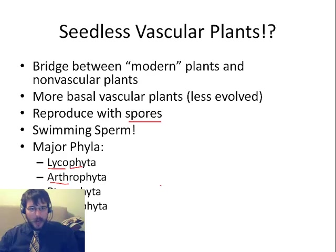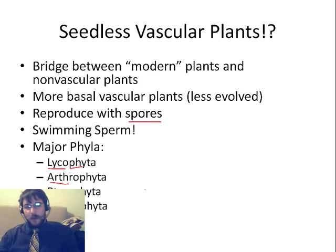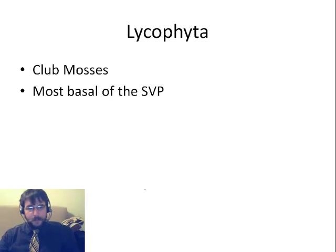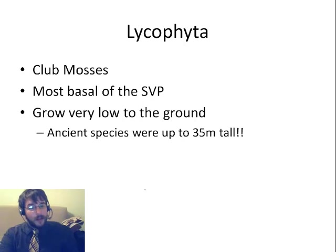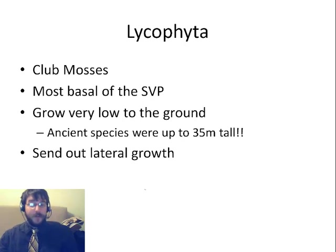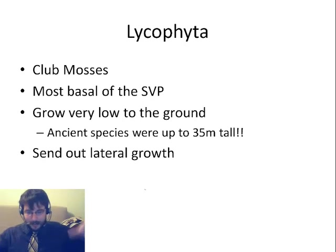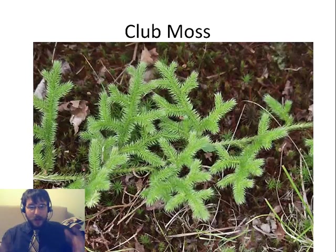There's Pterophyta — the fern plants — and then there's Solithophyta, which we won't look at in lab because they're not even native to Ohio. So, Lycophytes are the most basal group. Their common name is club mosses. They grow very, very low to the ground and are more similar to regular moss. However, ancient species have been found up to 35 meters tall. They send out really nice lateral growth and colonize areas well.